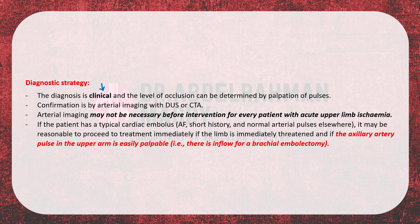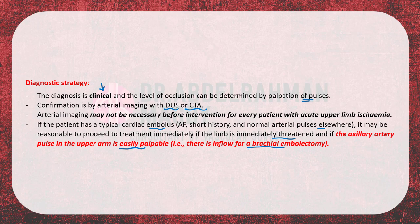Regarding diagnostic strategy: as with acute lower limb ischemia, the diagnosis is clinical. The level of occlusion can be determined by palpation of pulses, and confirmation is by arterial imaging with duplex ultrasound or CT angiography. Arterial imaging may not be necessary before intervention for every patient. If the patient has a typical cardiac embolus from atrial fibrillation, a short history, and normal arterial pulses elsewhere, it may be reasonable to proceed to treatment immediately if the limb is immediately threatened and the axillary artery pulse is easily palpable.